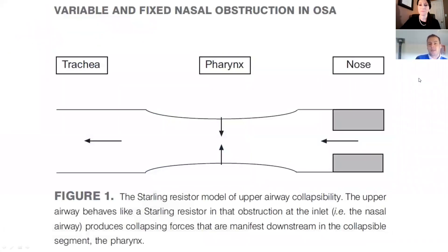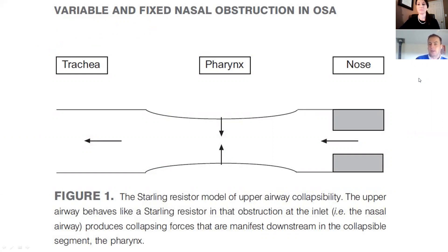One model we need to consider when looking at nasal obstruction is the Starling resistor model. Basically, this model states that if there's an obstruction upstream, it can lead to collapse downstream. So if the nose is blocked or there's difficulty breathing through the nose, that can create an environment that increases the collapsing forces in the throat. If the upper airways collapse — and the upper airway is a collapsible tube — the individual is going to stop breathing, and that's going to manifest as obstructive sleep apnea.